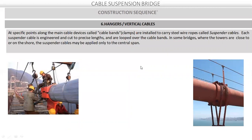Next is the hangers, also called vertical cables. Hangers are the supporting part of the deck. The deck is supported by the main cables at specific points. A device called cable bands or clamps is installed to carry the steel wire rope that holds the suspender cables. Each suspender cable is engineered and cut to a precise length and looped over the cable bands. In some cases where the towers are close to the shore, the suspender cables may be applied only to the central span.